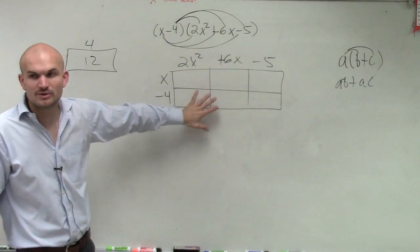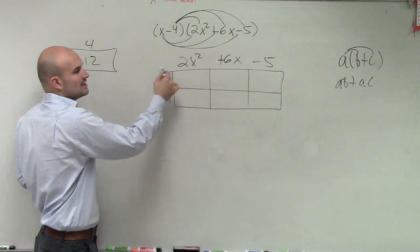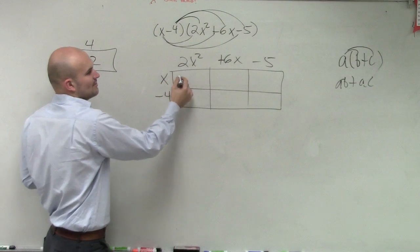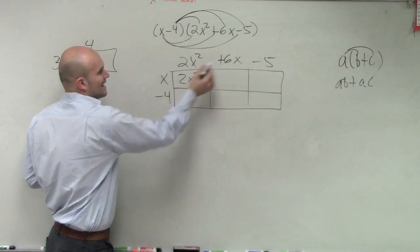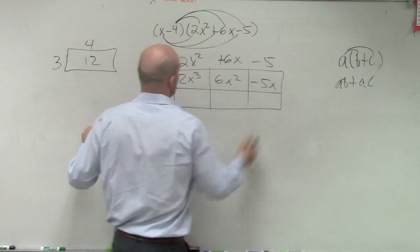So now what I'm going to do is I'm just going to find the area of each one of these boxes. So x times 2x² is 2x³. x times 6x is 6x². x times negative 5 is negative 5x.